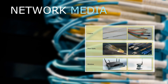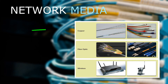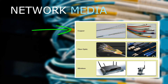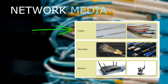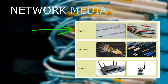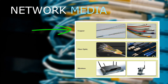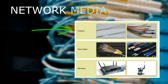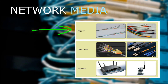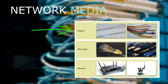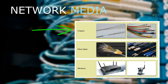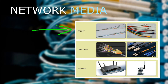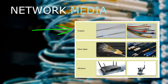Network media can be categorized in three forms. The first one is copper. The most commonly used media for data communications is copper wires, which may be coaxial or twisted pair. Data is transmitted on copper cables as electrical pulses. These cables can be used to connect end-user devices as well as intermediate devices, such as routers and switches.